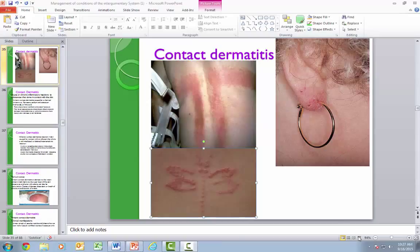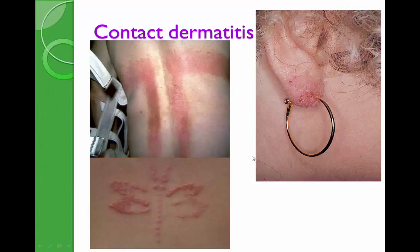We will continue with the second part of dermatological conditions, starting with contact dermatitis. Contact dermatitis is an acute inflammation of the skin caused by irritants or allergens. Most of the time, contact dermatitis reveals prior exposure to an allergen and mimics or has the same form as the prior irritant that was in contact with the skin. It is most often symmetric and bilateral.